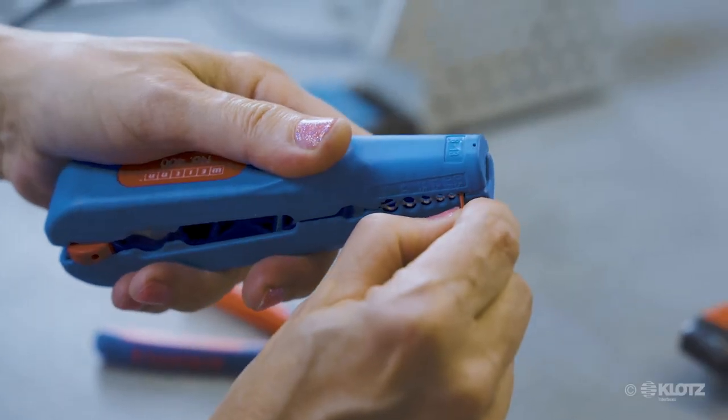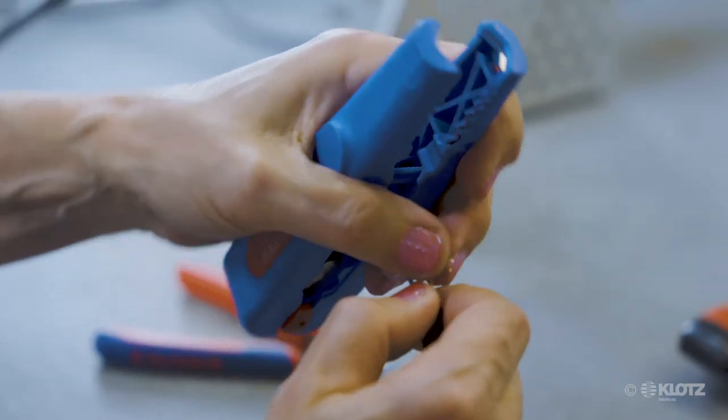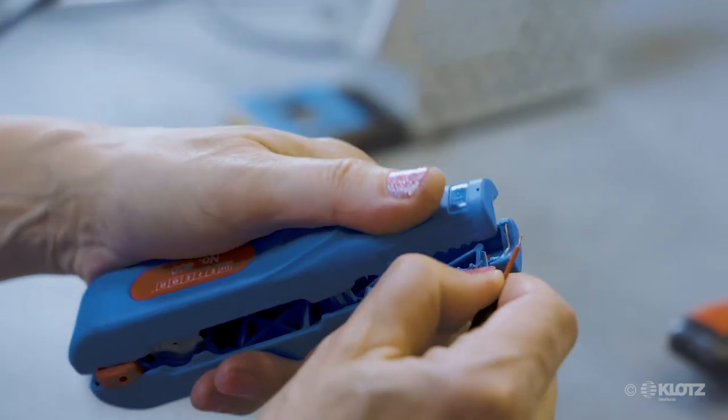With your multi-stripper tool, please strip the outer jacket of the two red and blue colored conductors about 5 mm long.